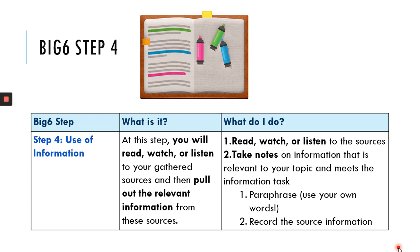Step four: use of information. So at this step you're going to interact with your resources, meaning that you're going to read, watch, or listen to your gathered sources and then pull out—extract, that's a fancy word for pull out—the relevant information from these sources. So first you're going to engage, interact with those sources, read, watch, or listen to them, and then to extract, to pull out that relevant information, you're going to take notes.